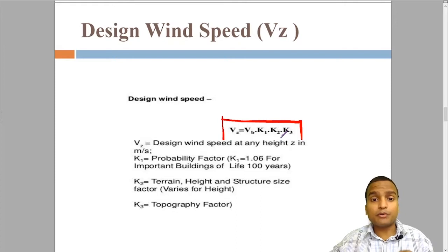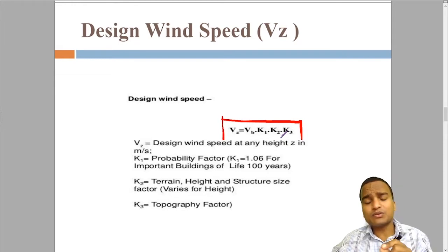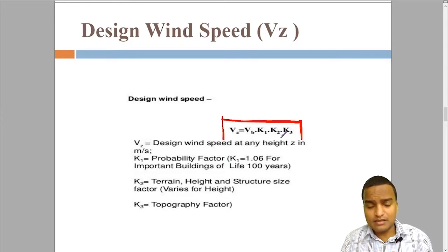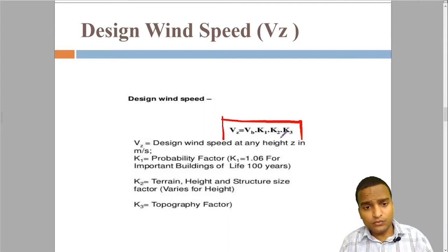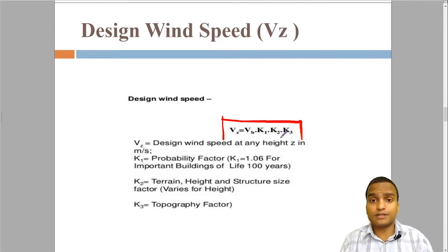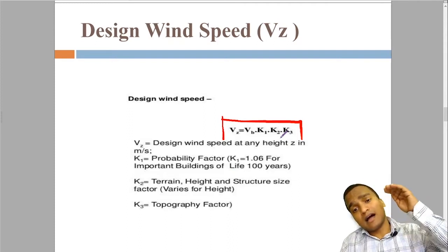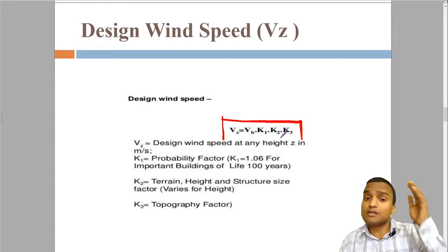K1 is called probability factor, K2 is called terrain height and structure size factor, and K3 is called topography factor. If you see, K2 depends on the height of the structure also. So for a building, at the lower floors K2 will be something different, whereas at the high floors K2 will be something different.